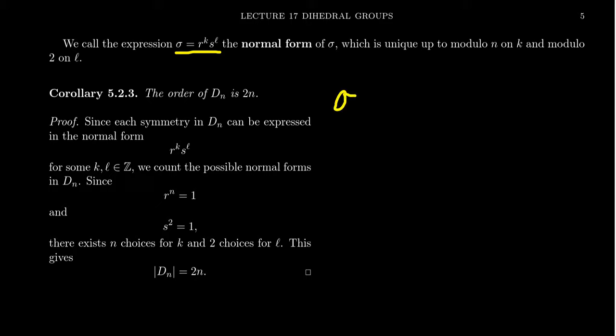I should mention that every element in the dihedral group is uniquely determined by its normal form. So for example, if you have two elements sigma and rho, and sigma has normal form r to the k times s to the l, if rho has that same normal form r to the k times s to the l, that actually means these two things are equal to each other. So two elements that have the same normal form are actually the same element. But let's say that you have two different normal forms for the same element. Sigma looks like r to the k times s to the l and r to the k prime times s to the l prime.